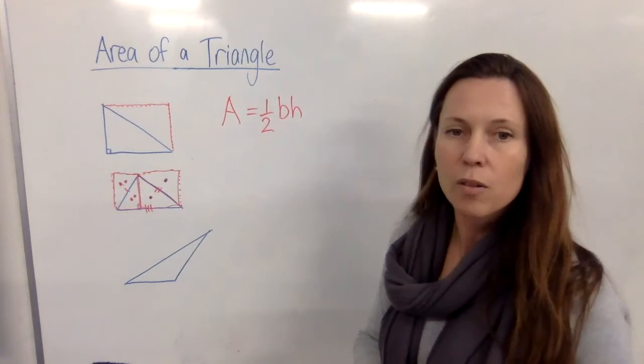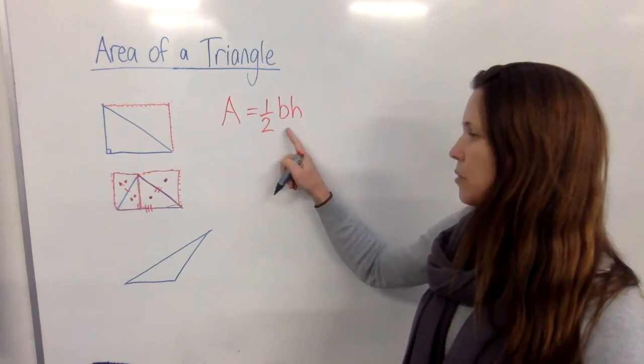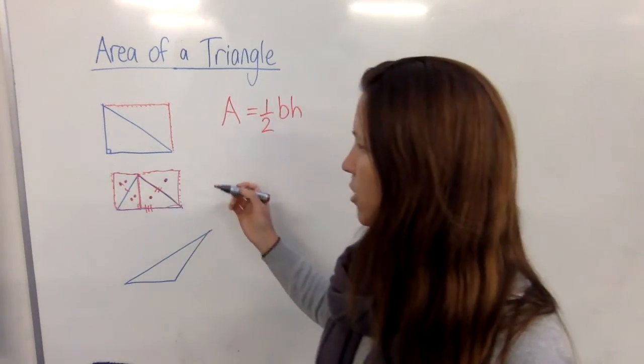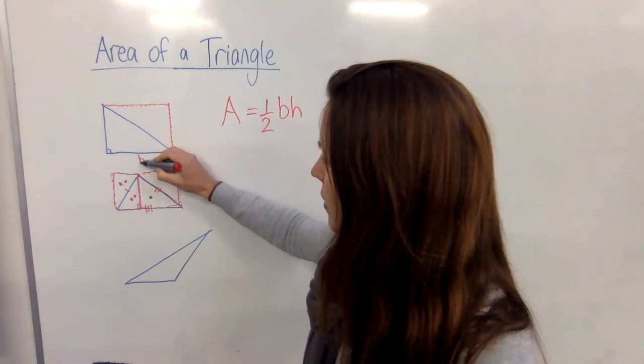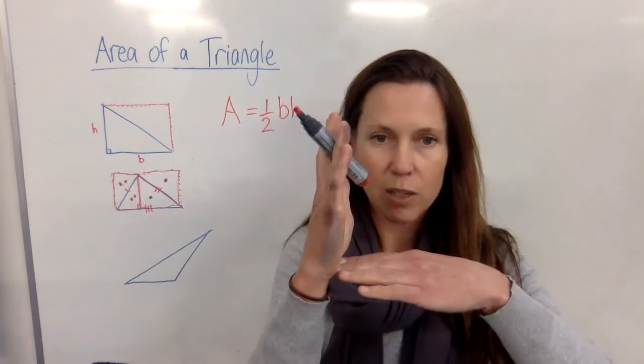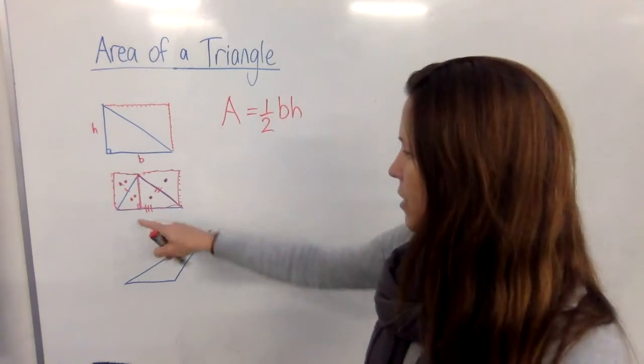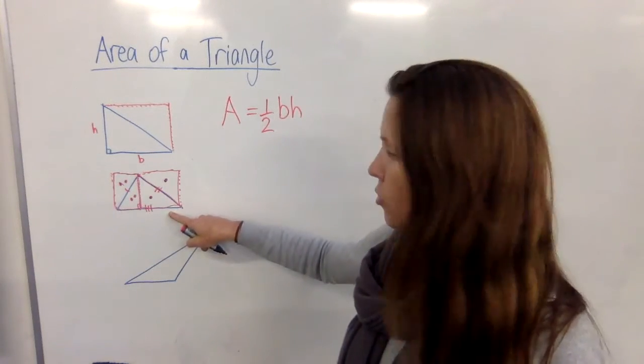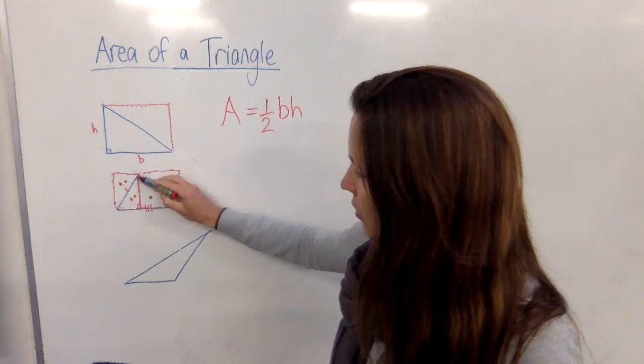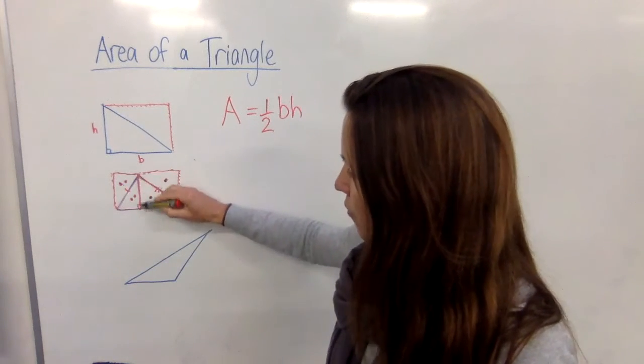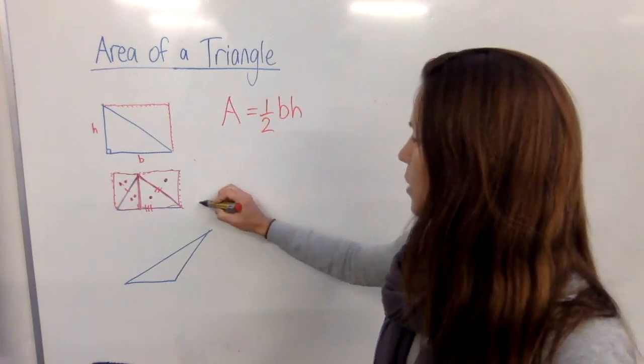So it still holds true: area equals half times base times height. Now the thing you need to be careful of is that the base and the height in this one are at right angles to each other—that's obvious—but in this triangle as well, we need to make sure that we're not using the slanty height here or here, but the vertical height.